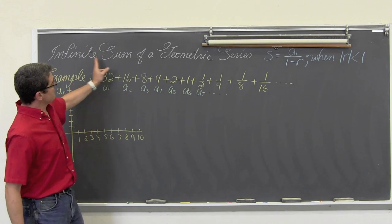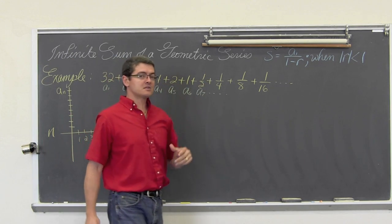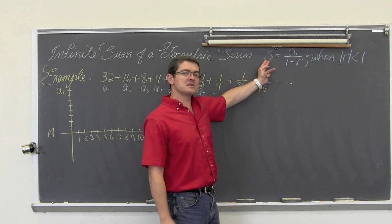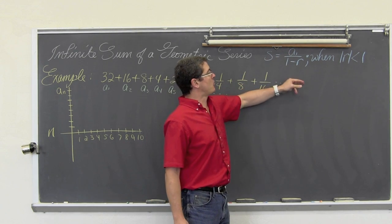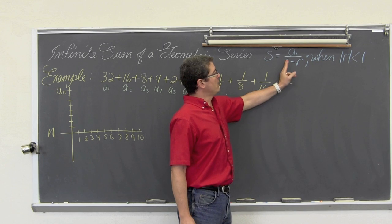Now, if you want to find the sum of a geometric series, it is a pretty simple formula. The overall sum is equal to a sub 1 over 1 minus r.